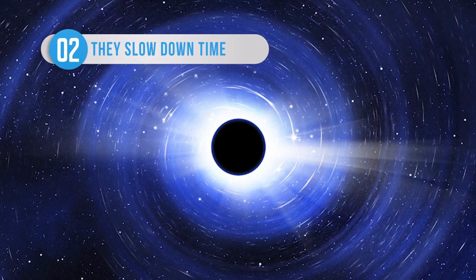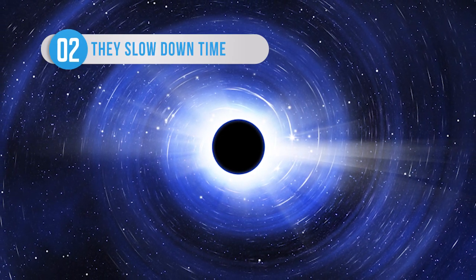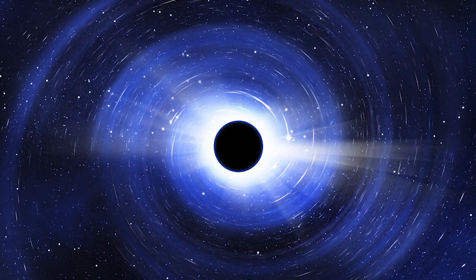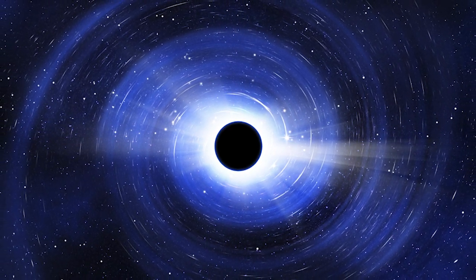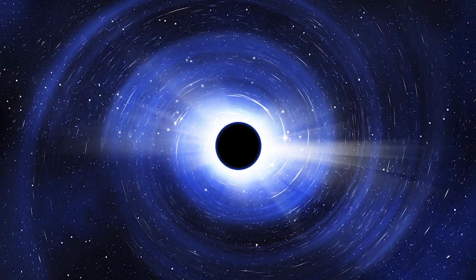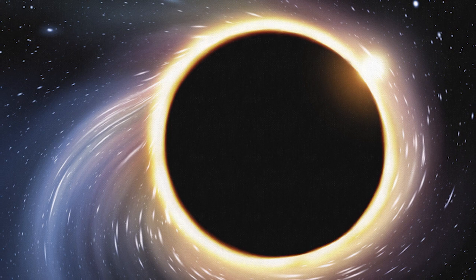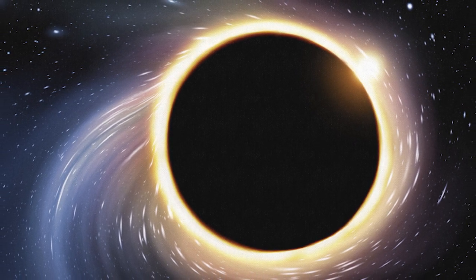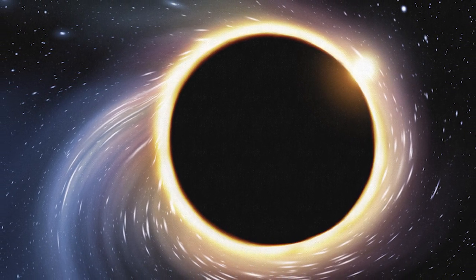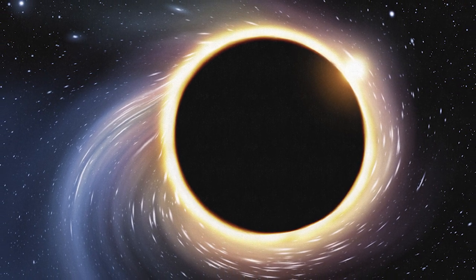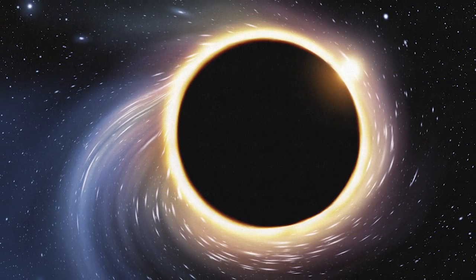If we could somehow watch a clock getting sucked into a black hole, its hands would appear to slow down as it approached the event horizon, and eventually it would seem to freeze altogether. The freeze in time is due to gravitational time dilation, which is explained by Einstein's theory of relativity. The gravity of a black hole is so strong it can slow down time, but from the clock's perspective, it is still functioning normally. Anyone who has watched Interstellar will get the idea.